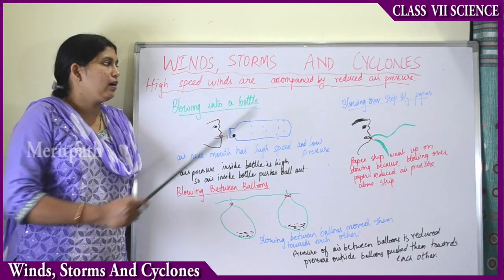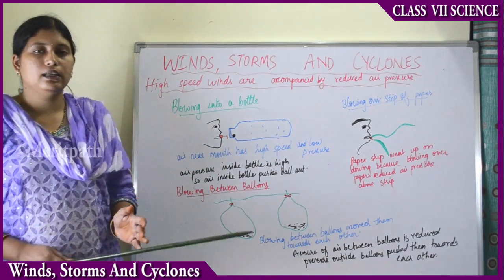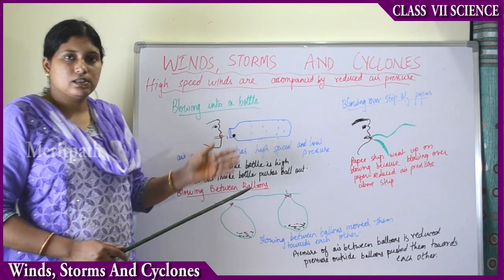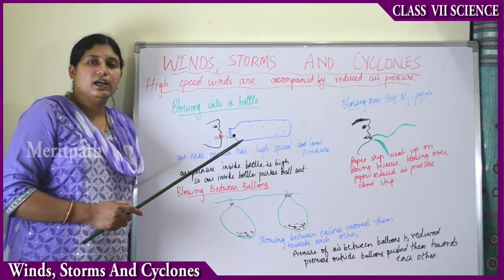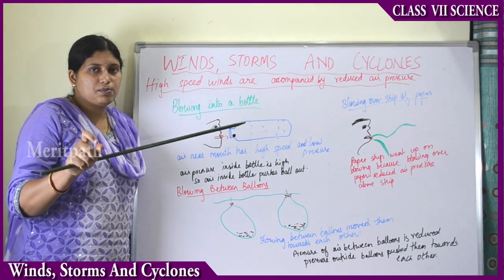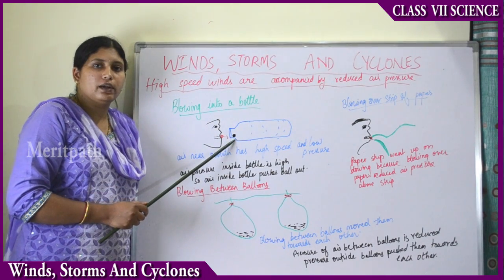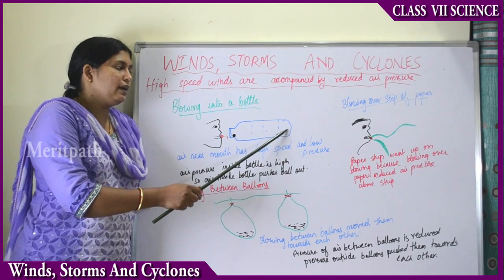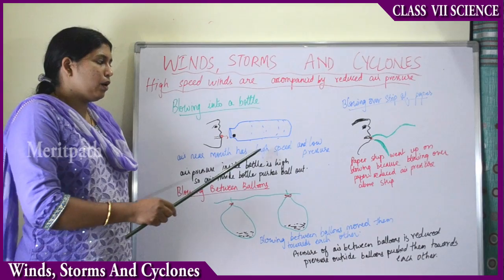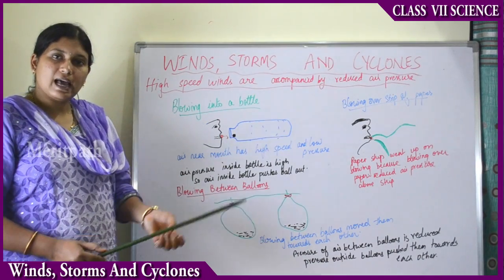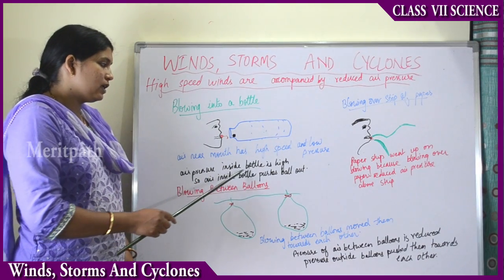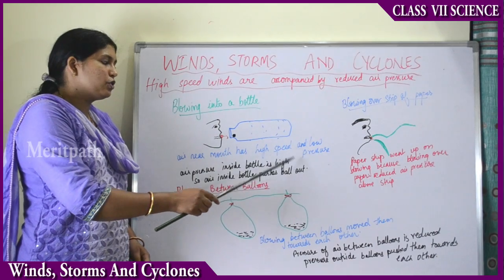High-speed winds are always accompanied by reduced air pressure. To prove this, take an empty one-liter plastic water bottle and crumble a small piece of paper into a ball. When you blow into the mouth of the bottle, the crumbled paper ball will not go inside. The air near the mouth has high speed and therefore low pressure, while the air inside the bottle has low speed and high pressure.